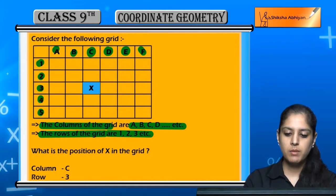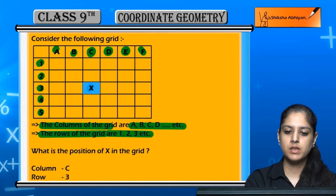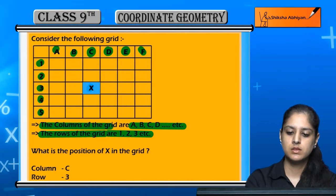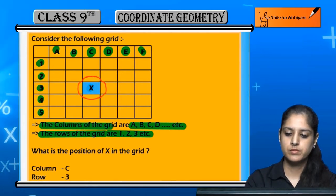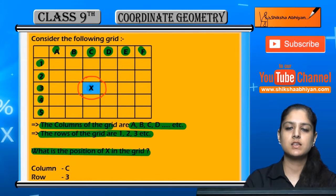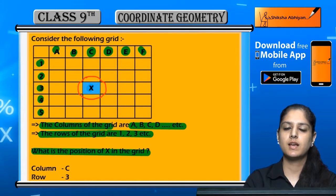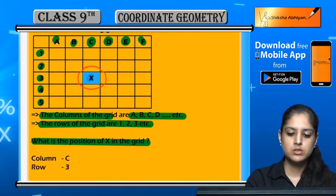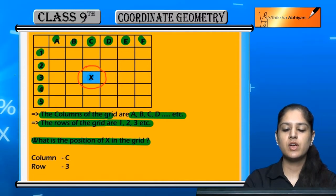On this grid, we have marked a point X. Now we have to find out the position of X in the grid. We need to tell what is the position of X in this grid.